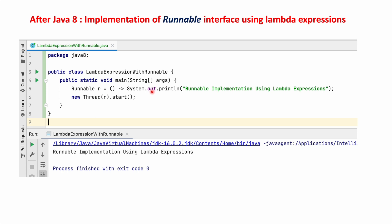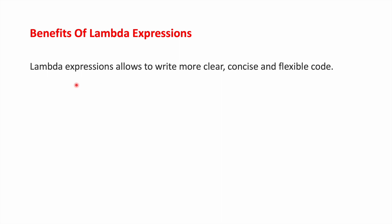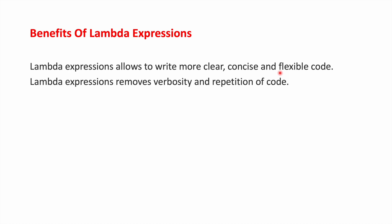Lambda expressions are applicable only in the place of functional interface implementation — in other places we cannot use them. Based on these examples, we understand that lambda expressions allow us to write more clear, concise, and flexible code. Lambda expressions also remove verbosity and repetition of code. In coming sessions we are going to learn more about Java 8, 9, 10, and other Java features. Thanks for watching.